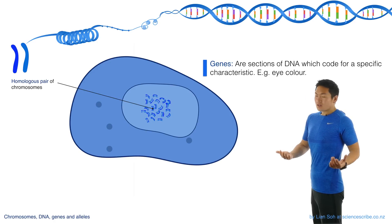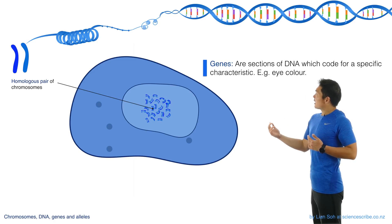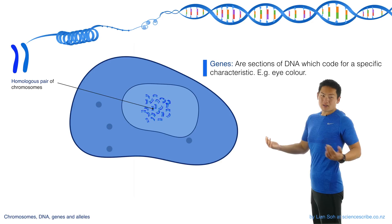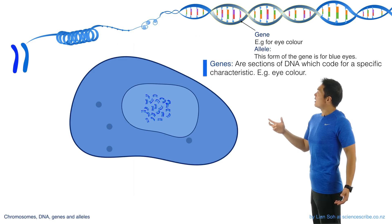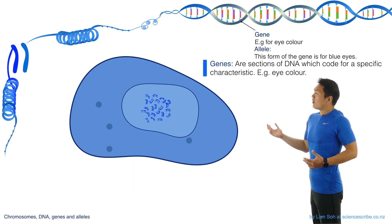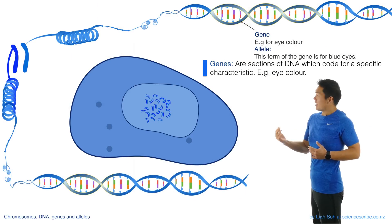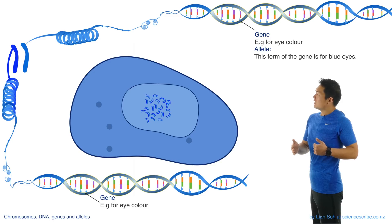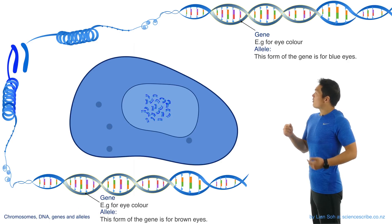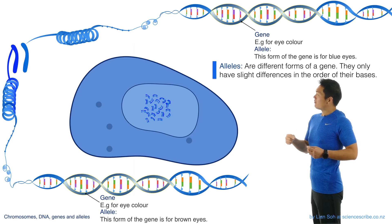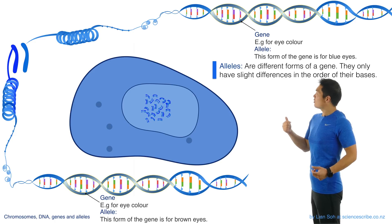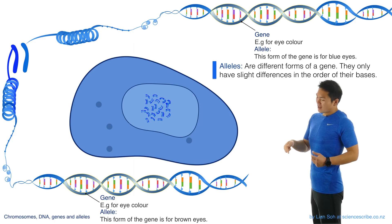Genes are actually just specific lengths of DNA that code for characteristics, such as eye color. This length of DNA here could represent eye color — say, blue eyes — and over on the other homologous chromosome, that same section, that same gene, could be something for say brown eyes. This means you have different forms of a gene, and different forms of that same gene are called alleles. So this could be the allele for blue eyes and this would be the allele for brown eyes.